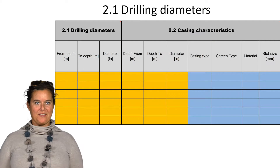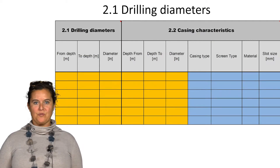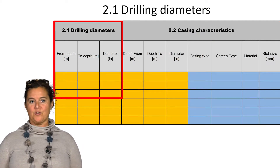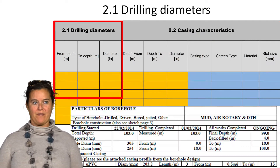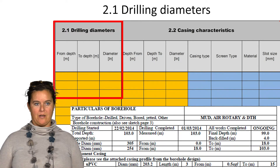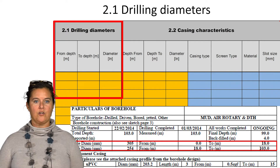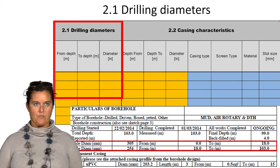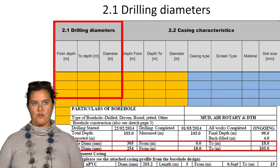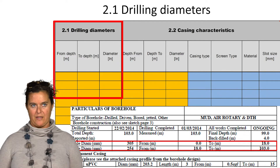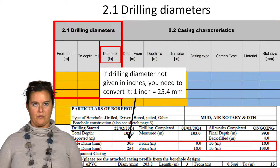We start with the drilling diameters. We go back to the borehole completion report to find the relevant information. As you can see from the borehole completion report in our case, the borehole diameter is in millimeters, while in this spreadsheet we need to record the diameters in inches. So make sure that you convert the values into inches.